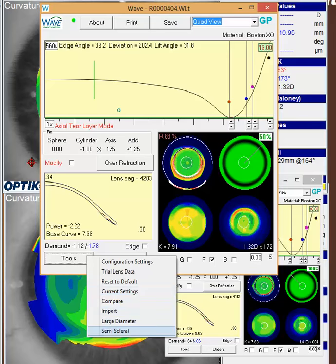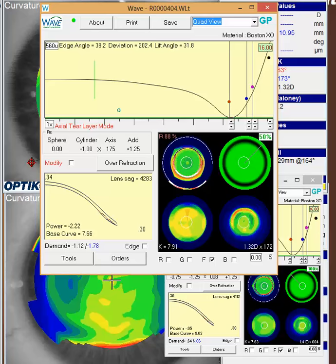The design tool that says semi-scleral, that will put you at about 15 and a half in a RSIM design. And that could be another alternative, and then you'll have to probably adjust a little bit on those edge angles as you go.